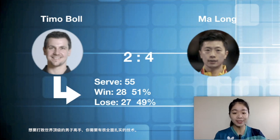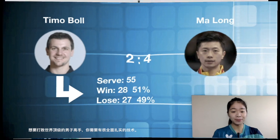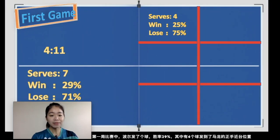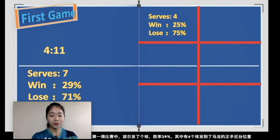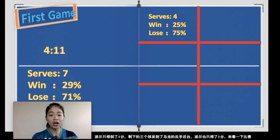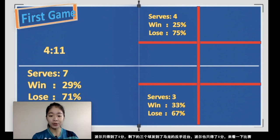In the first game, Timo served seven balls, winning 29% and losing 71%. There were four balls served to Ma Long's forehand shot area and Timo only got one out of four. The remaining three balls went to Ma Long's backhand shot area, where he scored one point.